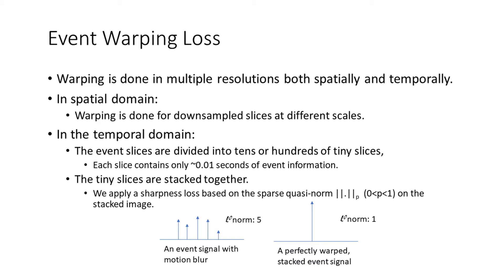Second, for fine alignment, event slices are subdivided into tiny slices of 0.01 seconds, and the tiny event slices are stacked into an image. Based on the observation that a stacked motion-compensated image is sharper than an uncompensated image, we impose a sharpness loss function, achieving enhanced alignment using timestamp information.